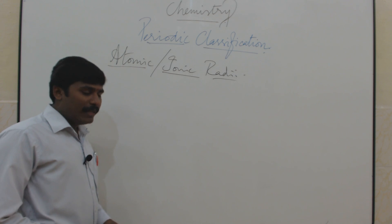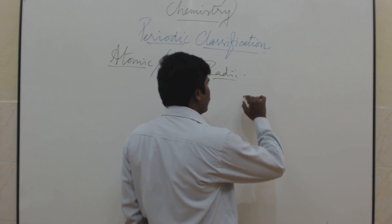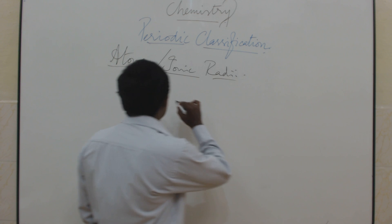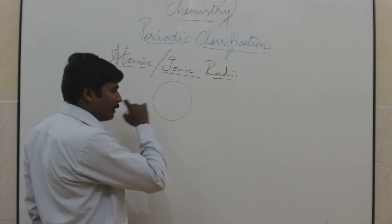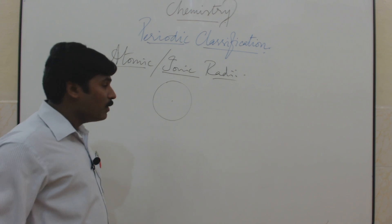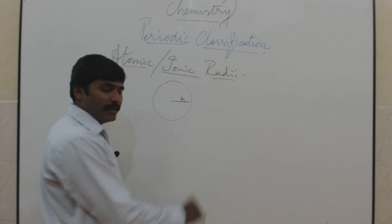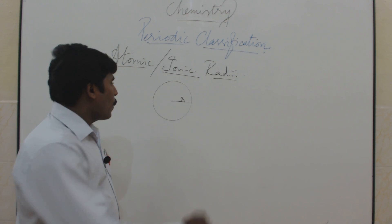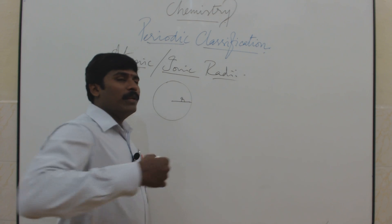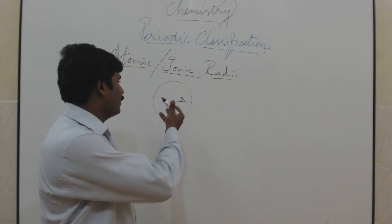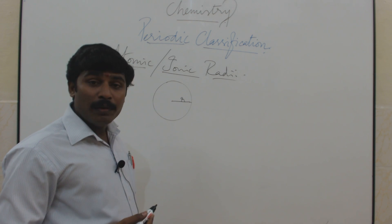What do you mean by radius? Just think about math — in a circle, the radius is the distance from the middle to the edge. Now think about the very same thing in chemistry — this is one atom.